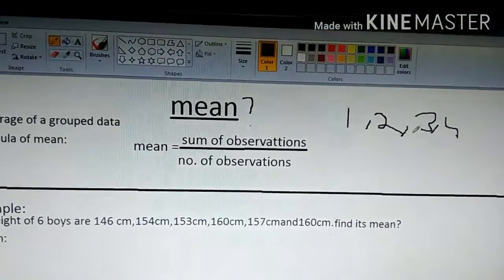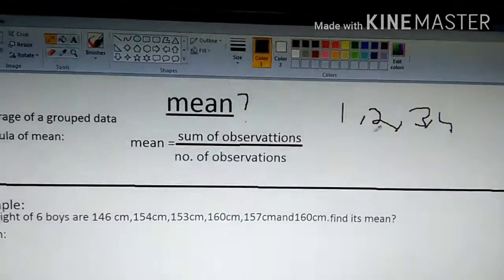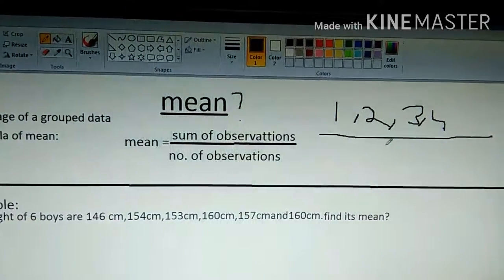Now, if we take this, there are four numbers. The sum of observations is 1 plus 2 plus 3 plus 4 by 4.